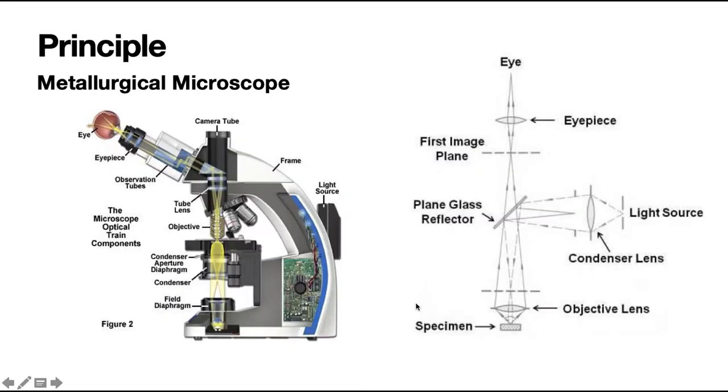So first let's try to understand the basic principle of the metallurgical microscope. From this light source, a horizontal beam of light from the light source is reflected by means of a plain glass reflector. As you can see these lights will be reflected.